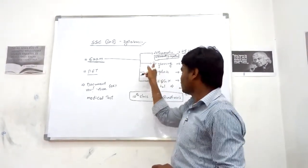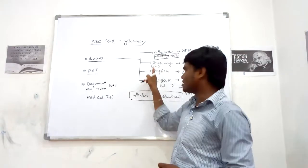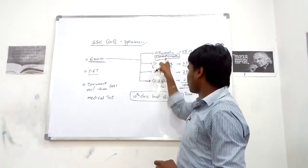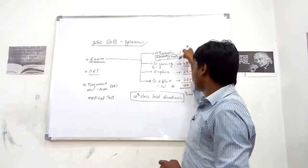First one is arithmetic, second one is general intelligence, third one is English, fourth one is general awareness and GK. Each one carries 25 marks.